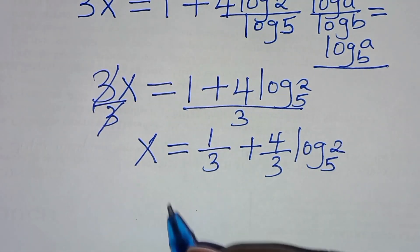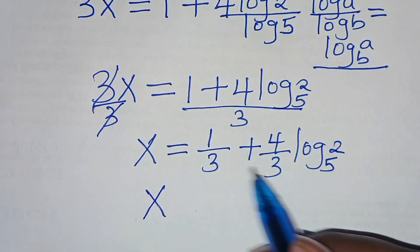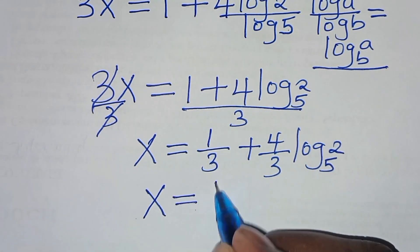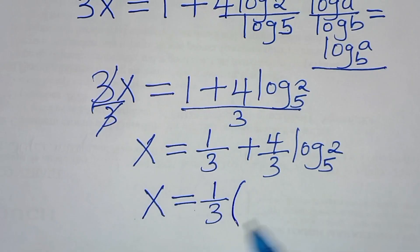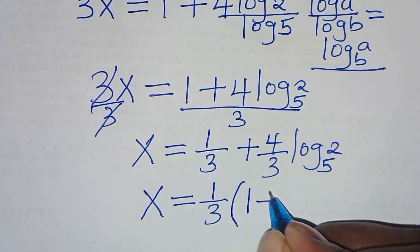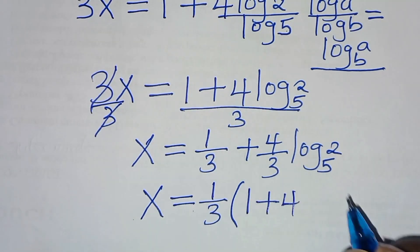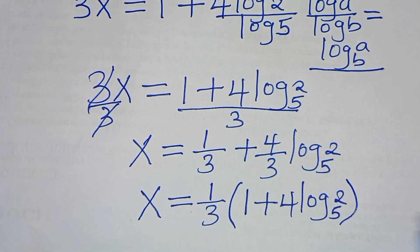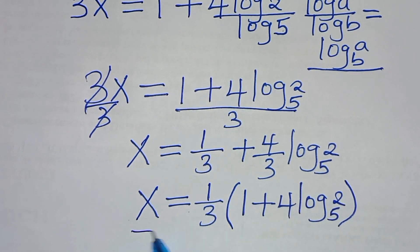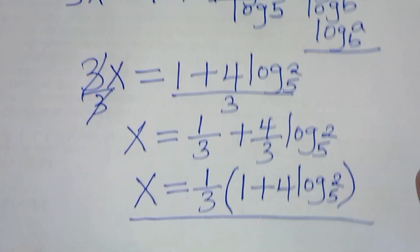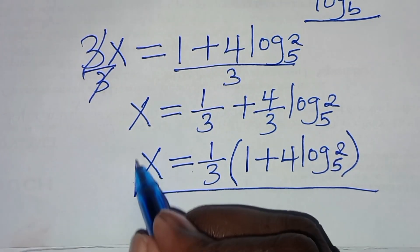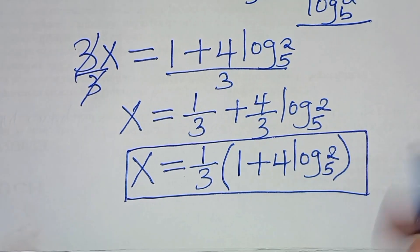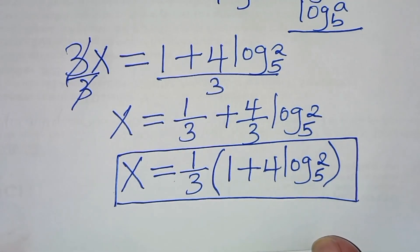We can factor out 1 over 3 into the parentheses, giving us x equals 1 over 3 times the quantity 1 plus 4 log 2 to base 5. This is the value of x. The next step is to verify that this value of x satisfies the equation.